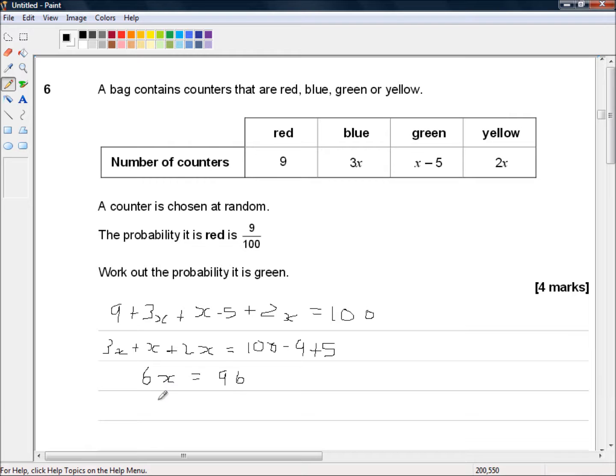And this actually looks doable without a calculator. I could use a calculator, but 96 divided by 3 is 32, 32 divided by 2 is 16.